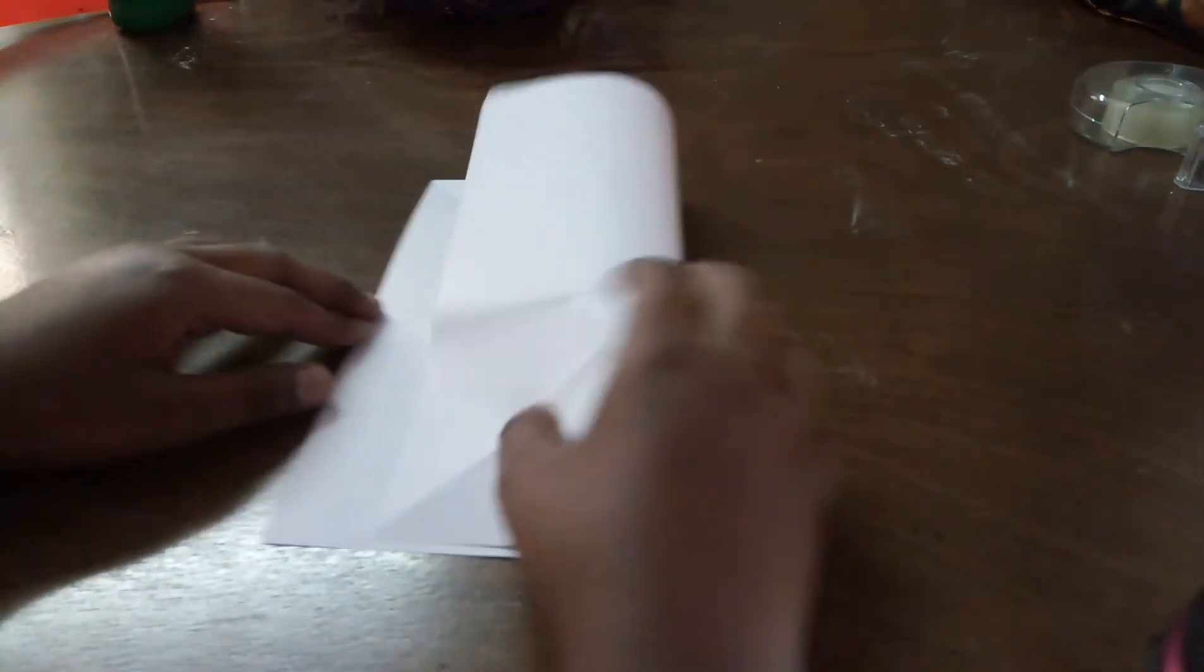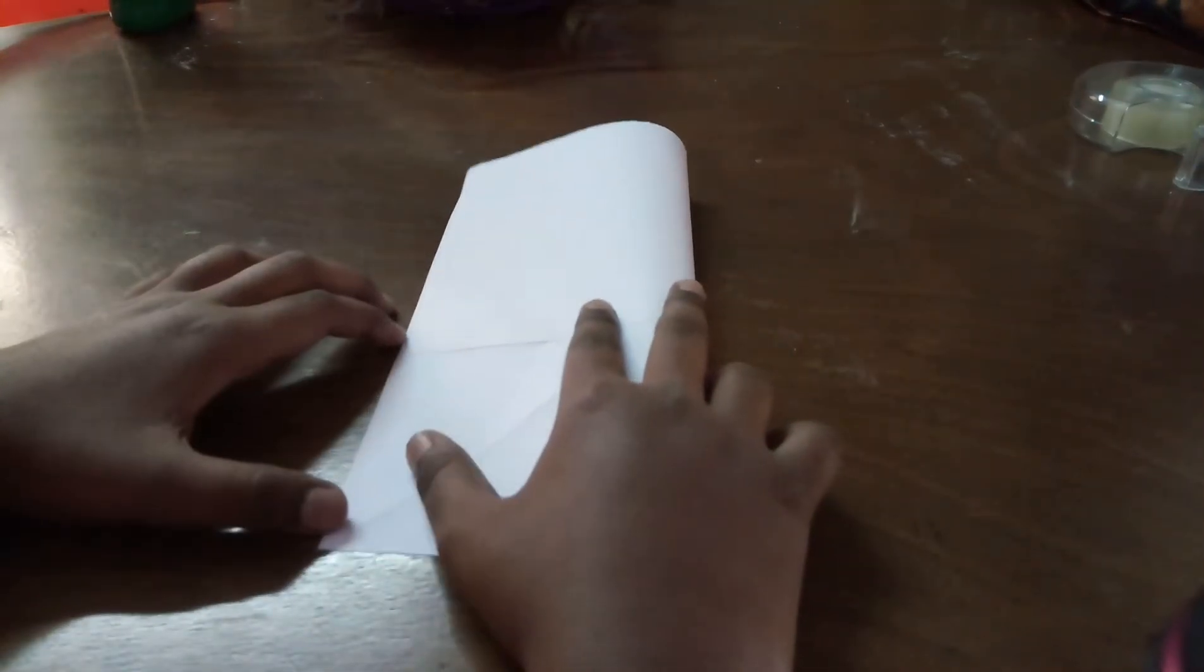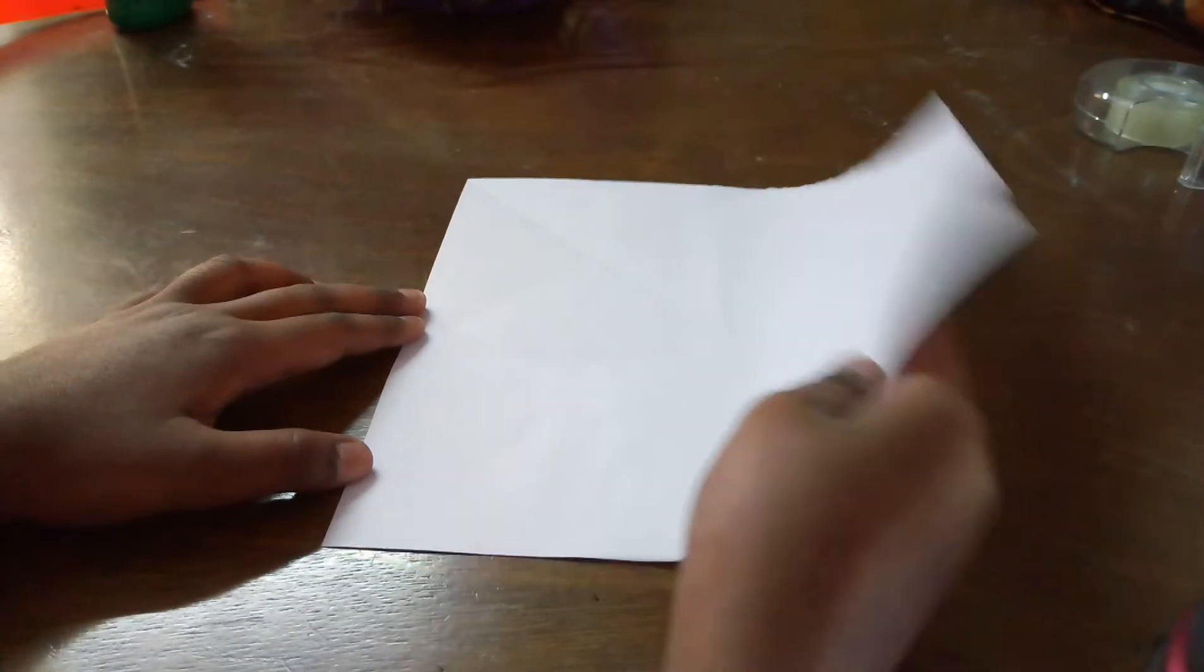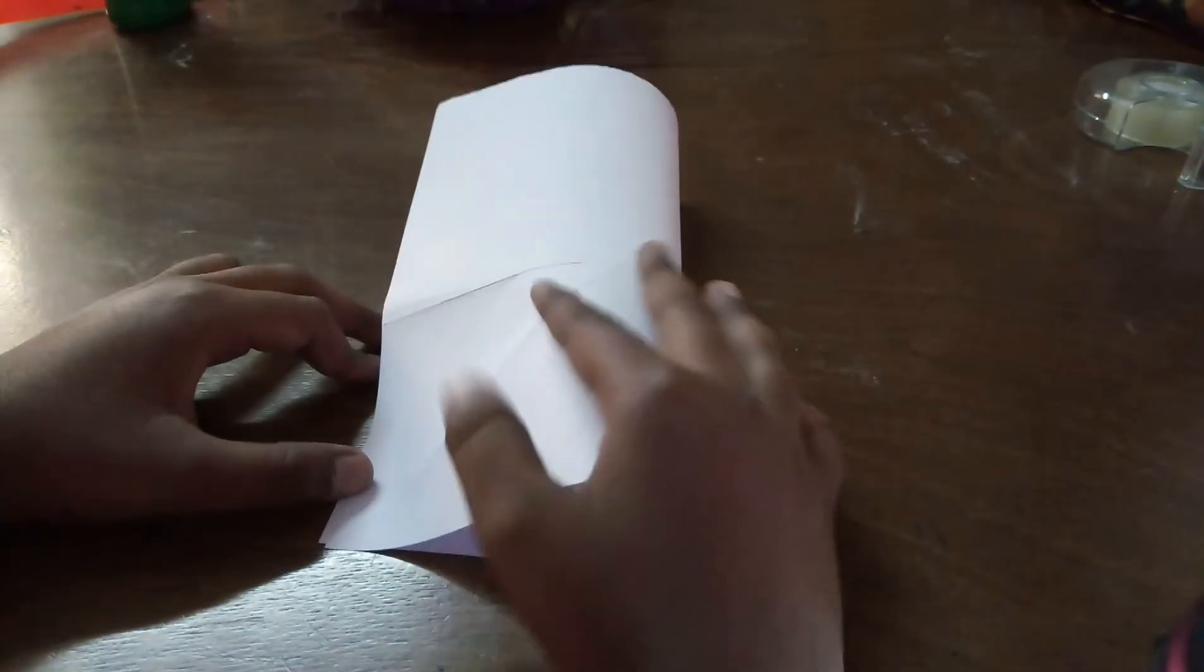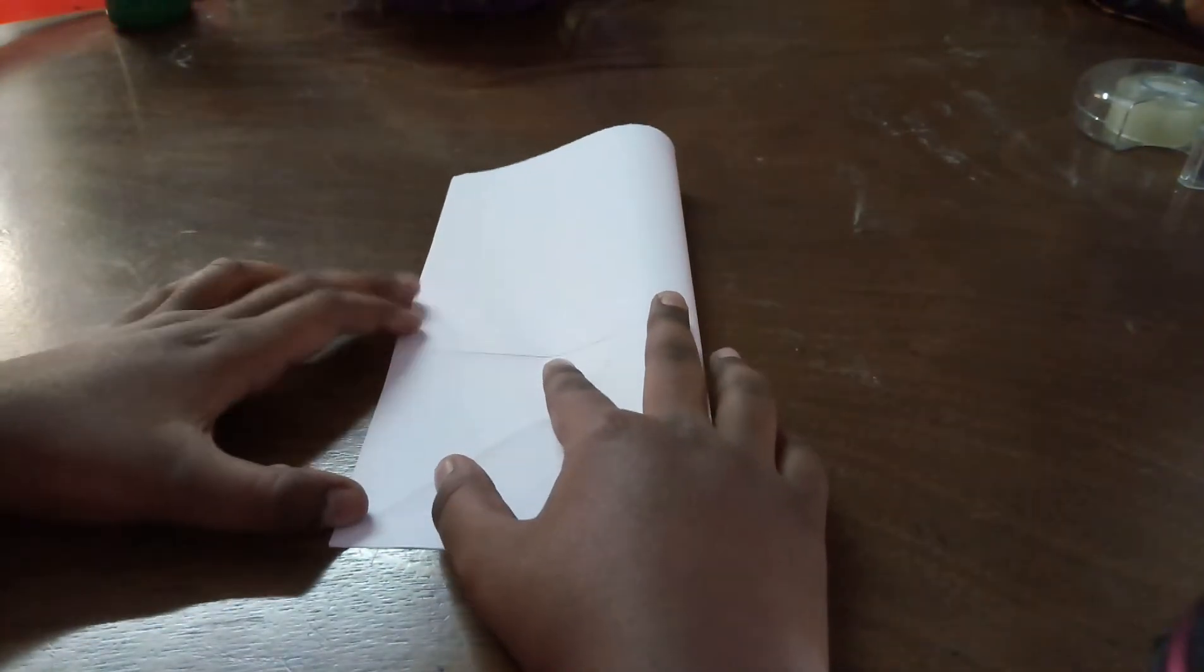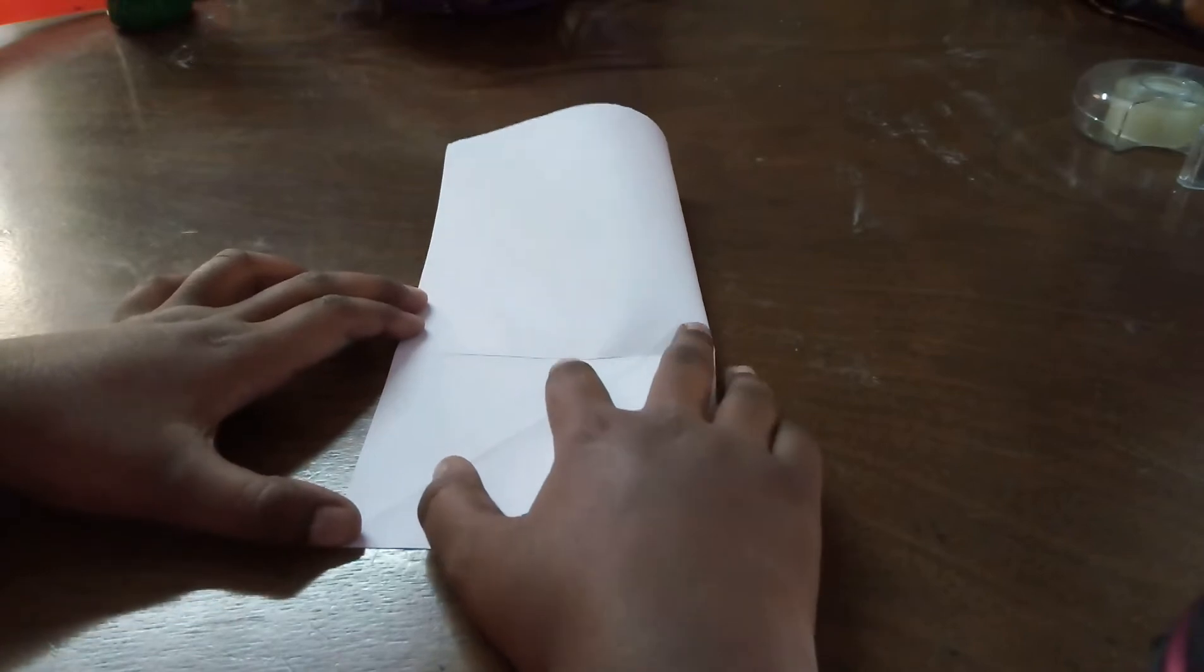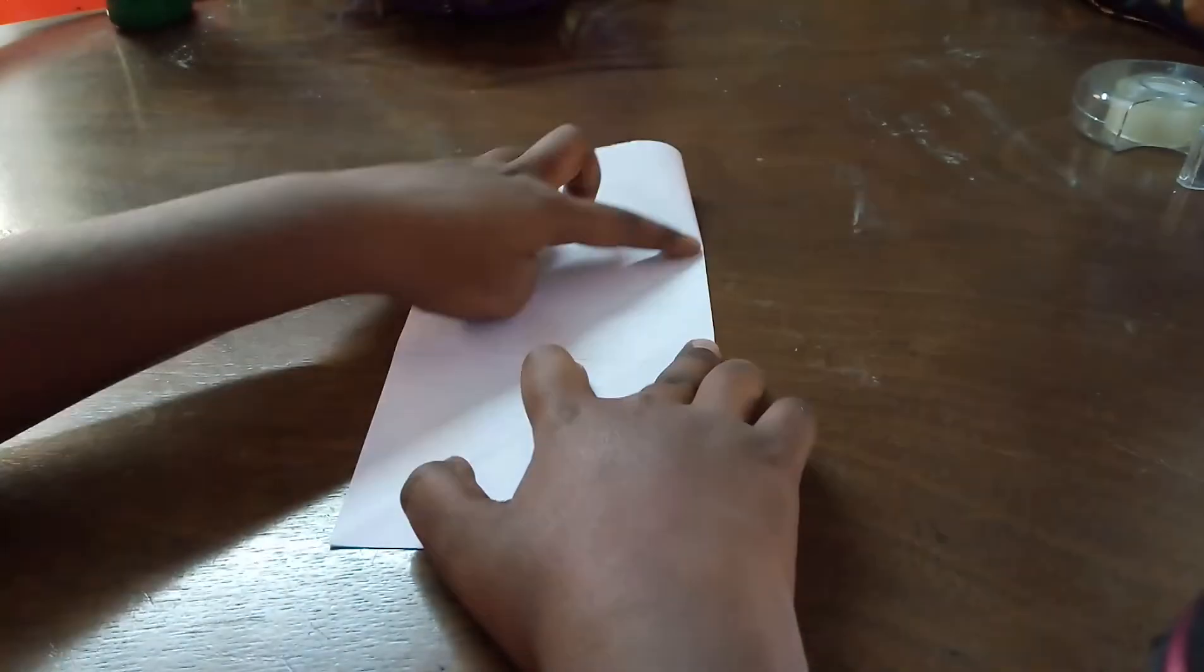First, what you want to do is make the sheet half. You want to fold it like this and just fold it like a book. Make sure the edges are perfect. That is the only way you will get a perfect boat.